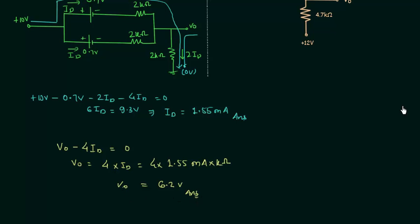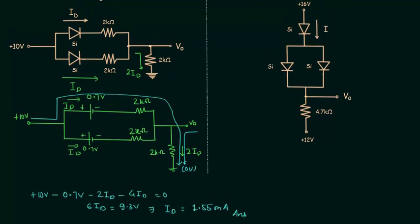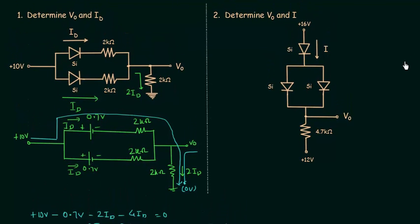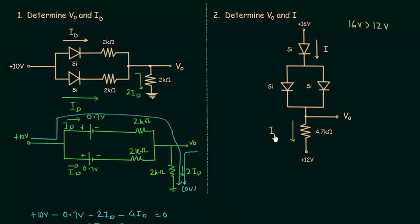Now I will solve the second problem. In this problem we have 3 PN junction diodes. Plus 16V is the potential at this point and plus 12V is the potential at this point. Since 16V is greater than 12V, current will move in this direction, and all 3 diodes will remain ON because the direction of current is similar to the direction of the arrow in the diode symbol. This current is I, so the current through this resistance is also equal to I.